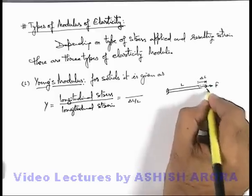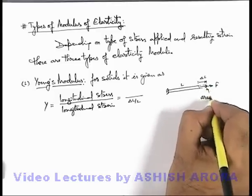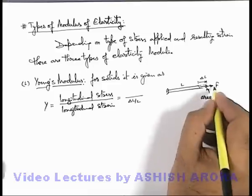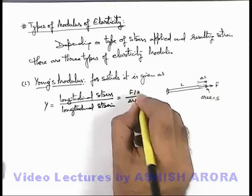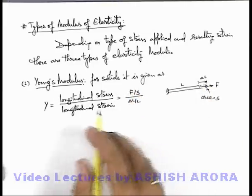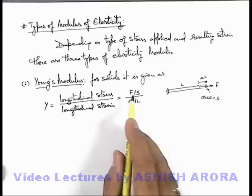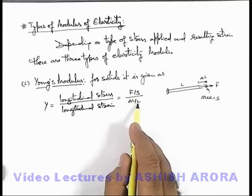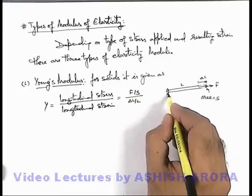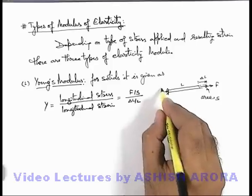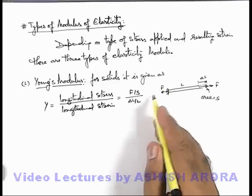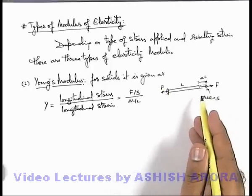In equilibrium if its cross sectional area is given to us as S, then its stress can be written as F by S. So here Young's modulus of elasticity for the material of this rod we can write as F by S upon delta L by L. Even if the rod is not fixed at this point and an external force F is applied in opposite direction then also the situation will remain same.